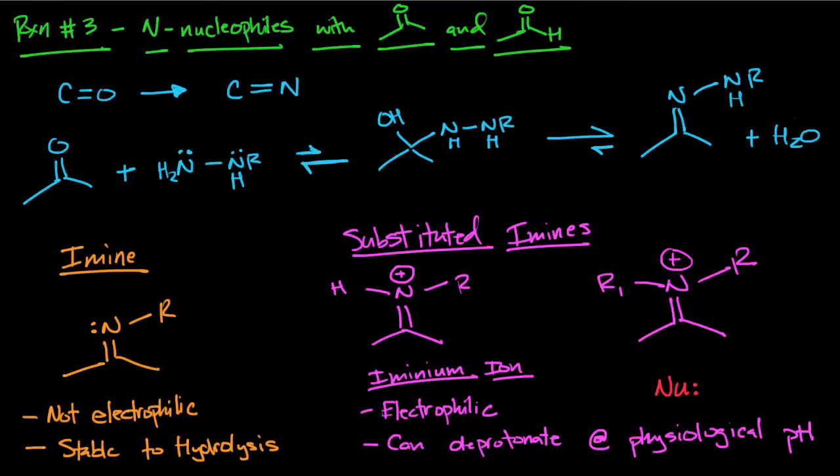Okay, third type of reaction we're going to talk about from chapter six: nitrogen containing nucleophiles and how they react with carbonyls. Every single time I see a nitrogen nucleophile reacting with a carbonyl, I just think of this. It's a quick and easy way to convert a carbonyl to an imine.